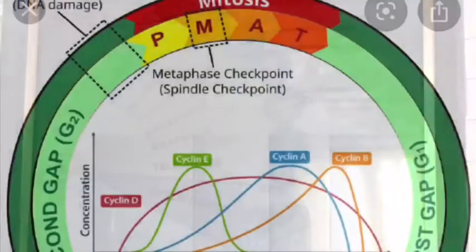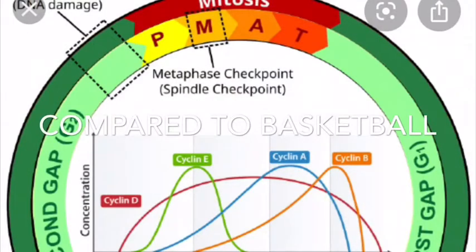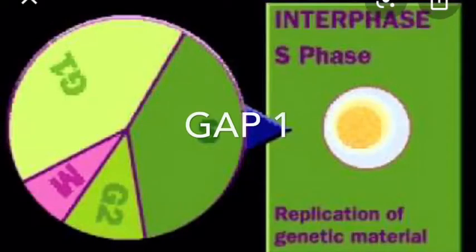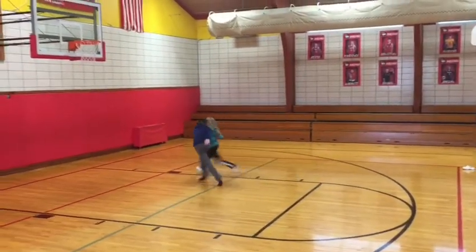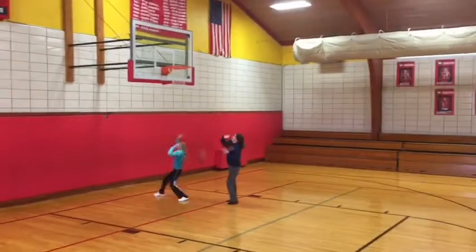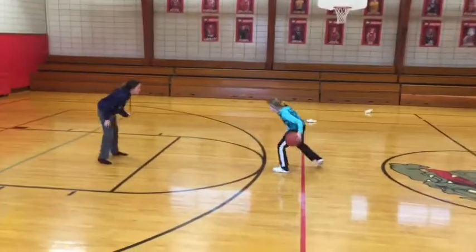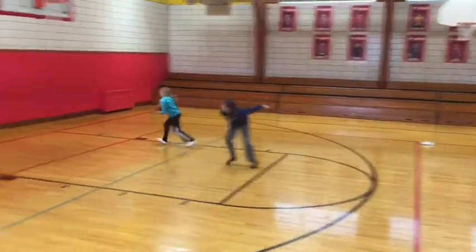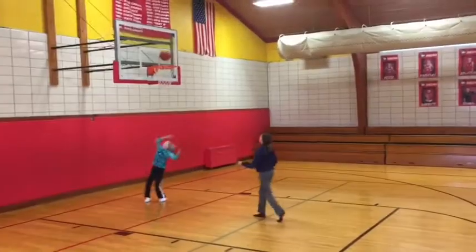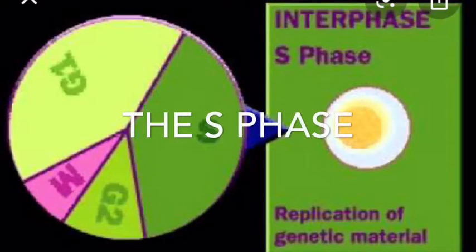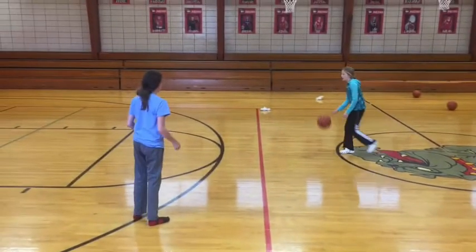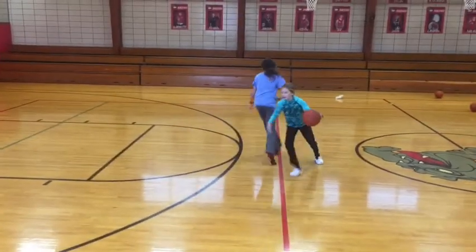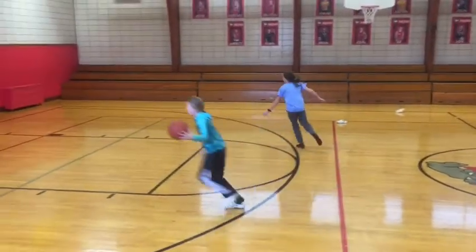The Cell Cycle Compared to Basketball. We compared Gap 1 to a player's growth because in Gap 1 a cell grows. We compared the S phase to going over plays because you replicate the material.